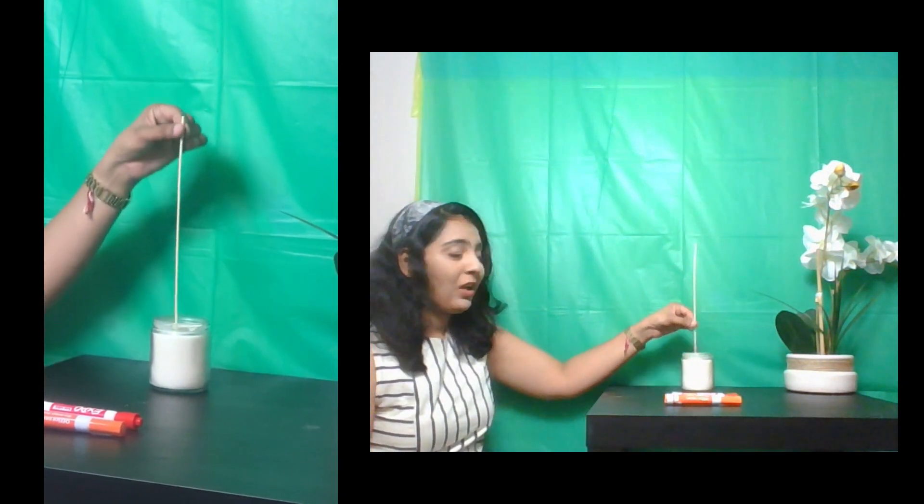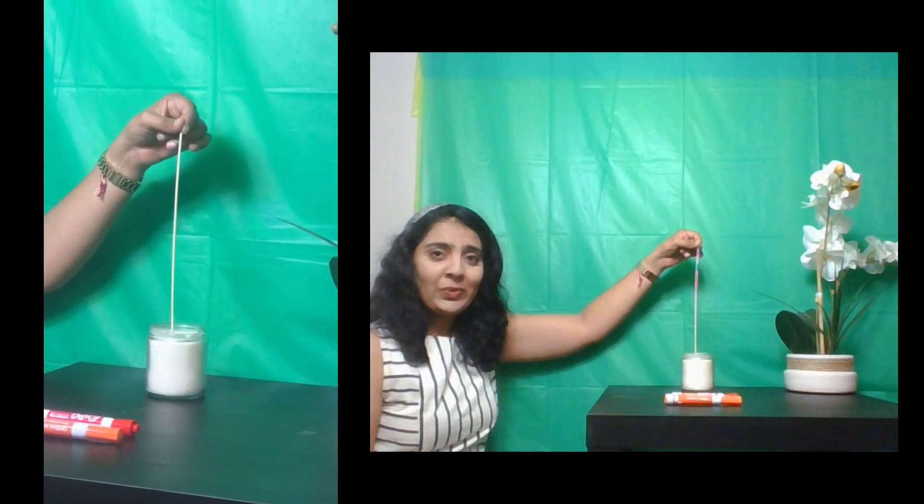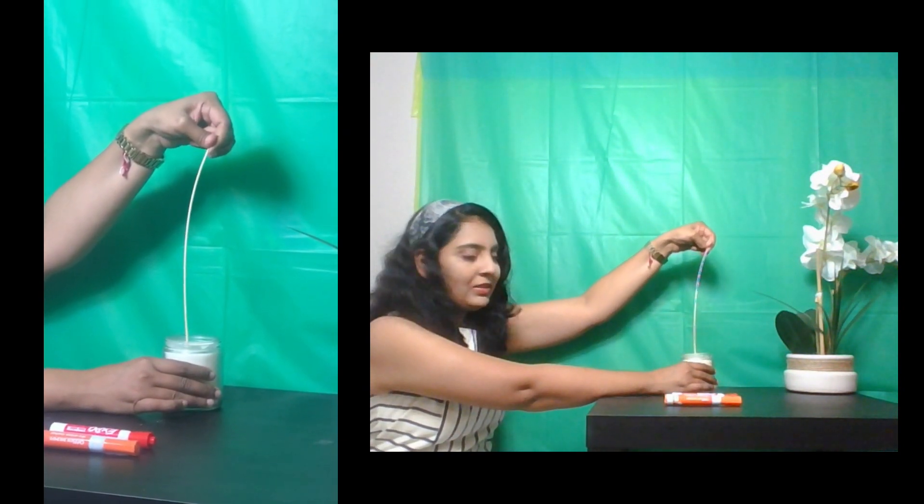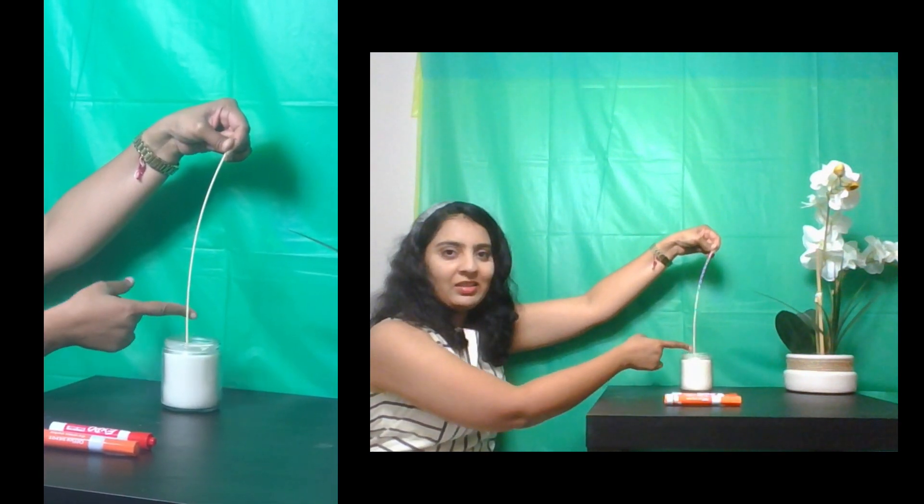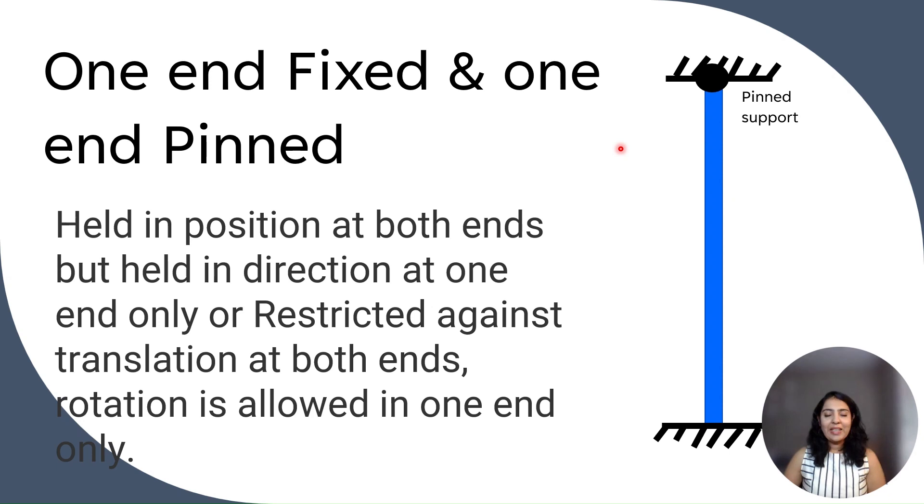This is a stick and this is wax. So in that wax I have fixed this stick and created a fixed support. So we have two conditions with the fixed support for that column with one end fixed and other end pinned. So let's do the experiment and apply the load. So can you observe the shape? It is straight here and curved here.